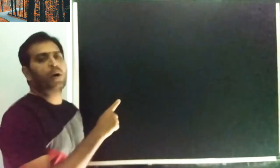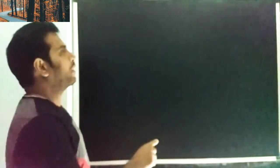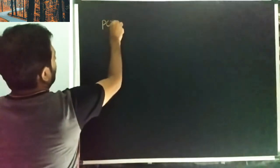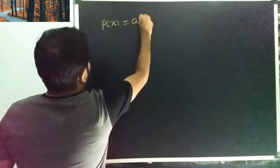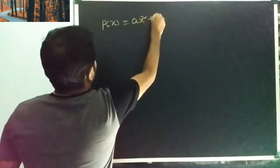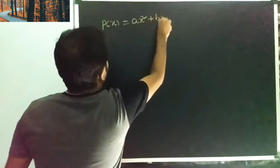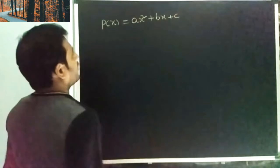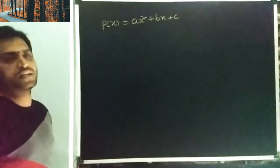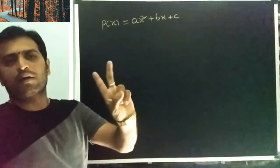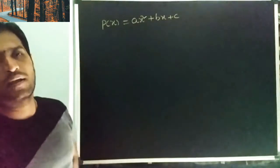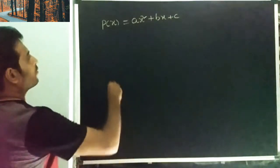First, what is the standard form of a quadratic polynomial? P of x is equal to ax square plus bx plus c. It is degree 2, so it has two zeroes — let the two zeroes be alpha and beta.